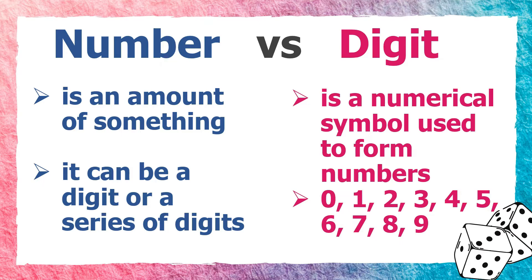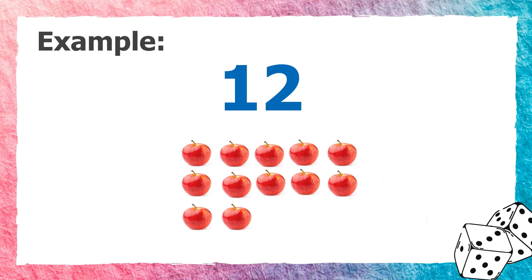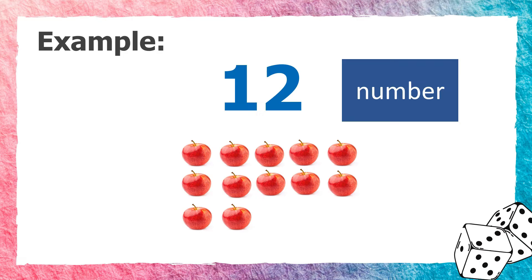To form numbers, we use the following digits: 0, 1, 2, 3, 4, 5, 6, 7, 8, and 9. Digits are like letters in the alphabet that are used to form words. For example, 12 is a number because it tells about the amount of apples in the picture. This number has two digits: 2 and 1.